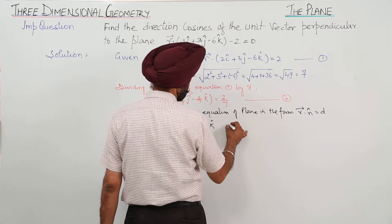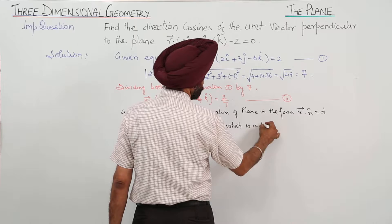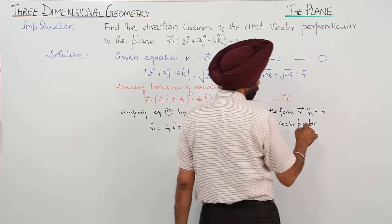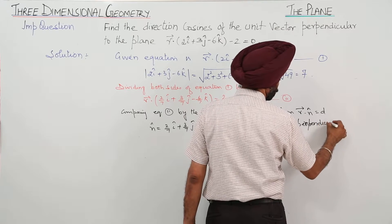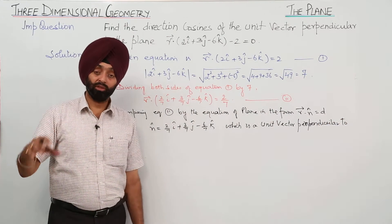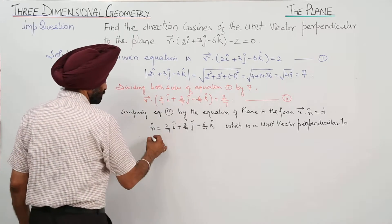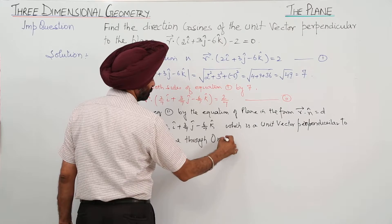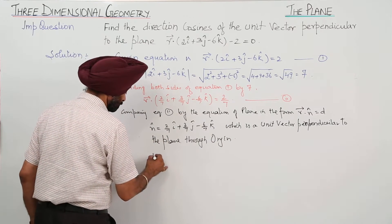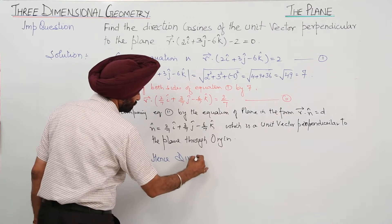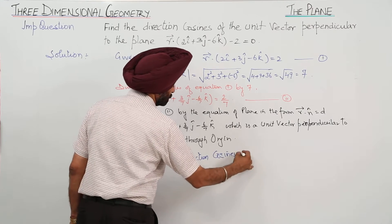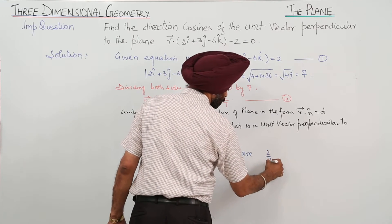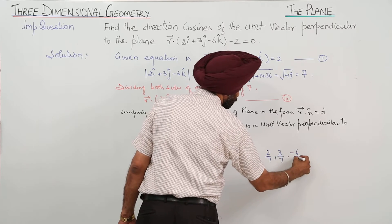This n cap is the unit vector perpendicular to the plane through the origin. Hence the direction cosines are 2/7, 3/7, and minus 6/7, and this is the answer.